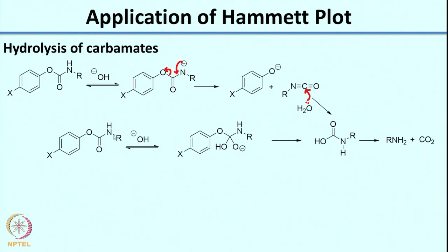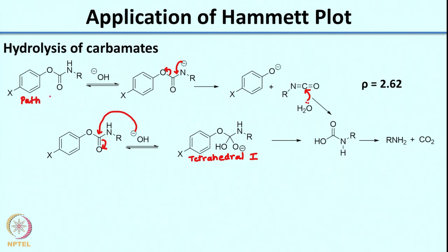Another mechanism for this would be where OH⁻ acts as a nucleophile instead of a base. Here OH⁻ is the nucleophile; it attacks the carbonyl carbon and what you end up getting is a tetrahedral intermediate. We can call the first mechanism Path A and the second mechanism Path B.